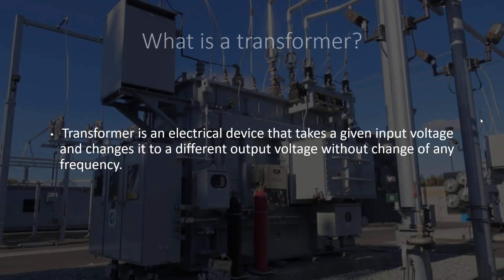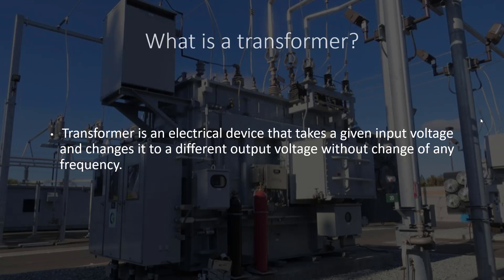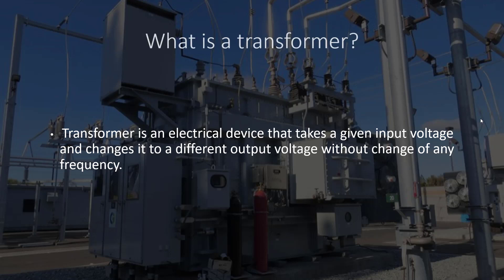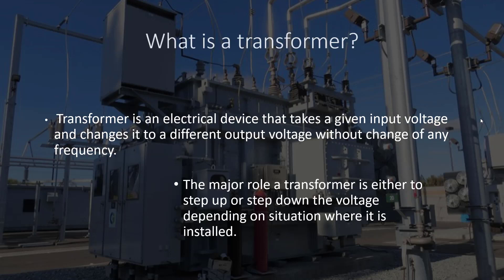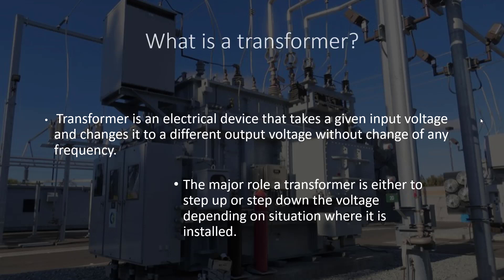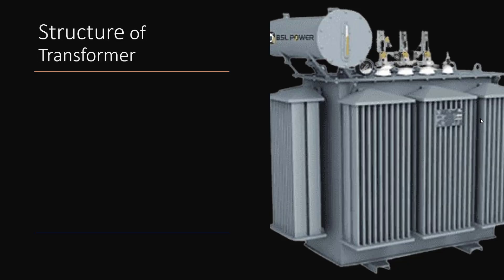What is a transformer? Transformer is an electrical device that takes a given input voltage and changes it into a different output voltage without changing any frequency. The function of a transformer is to change the input voltage into a different output voltage — it may reduce or increase the output voltage. The major role of a transformer is either to step up or step down the voltage depending on the situation where it is installed. Step up means increase, step down means decrease.